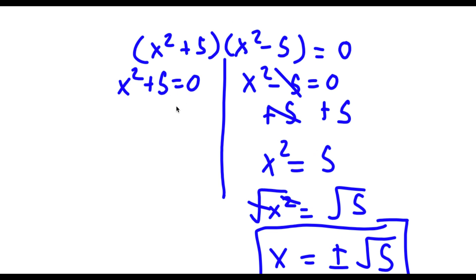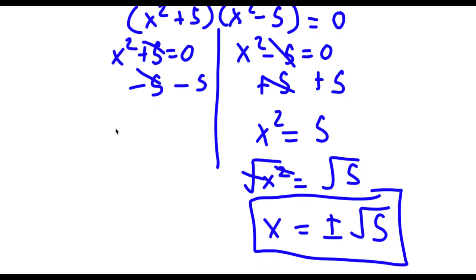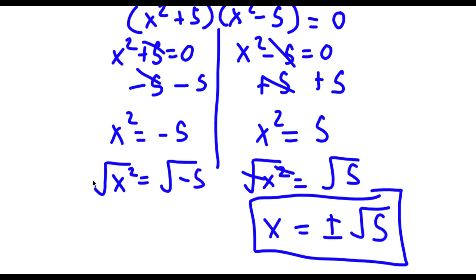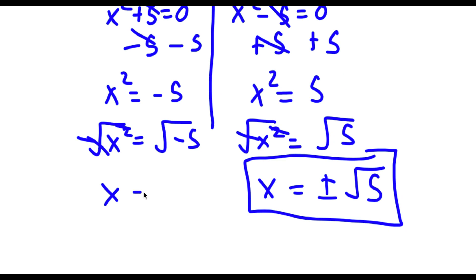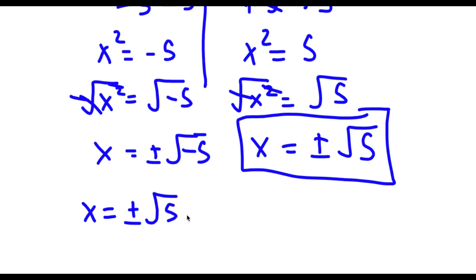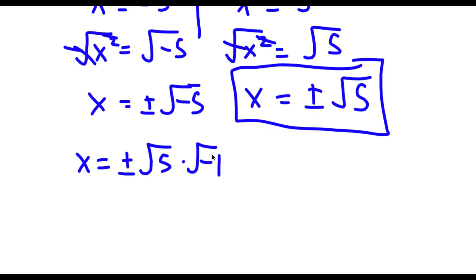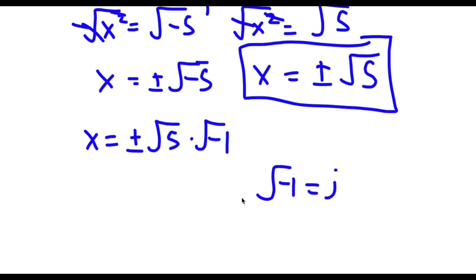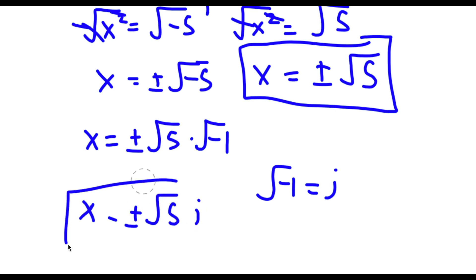Now I'm going to go ahead and do x squared plus 5 equals 0. To solve this, I'm going to first subtract 5 on both sides. These two cancel out, and now I have x squared is equal to negative 5. I'm going to take the square root on both sides again. The square root of x squared is simply x, equal to positive or negative square root of negative 5. The square root of negative 5 is the same thing as the square root of 5 times the square root of negative 1. The square root of negative 1 is equal to the imaginary number i. So x is equal to positive or negative square root of 5 times i. So these are my four solutions to this problem.